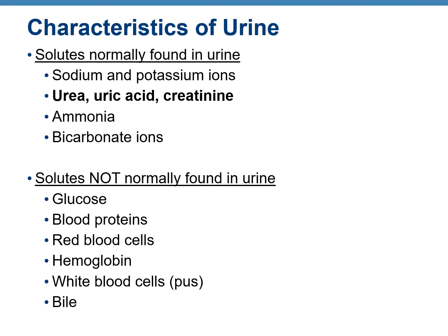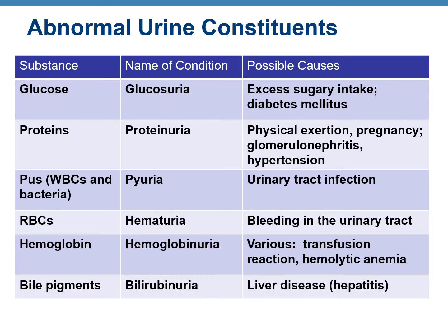The solutes not normally found in urine — the abnormal constituents — are glucose, blood proteins, red blood cells, hemoglobin, white blood cells, or bile. This table gives you a list of some abnormal urine constituents, the name of the condition caused by their presence, and the possible causes.